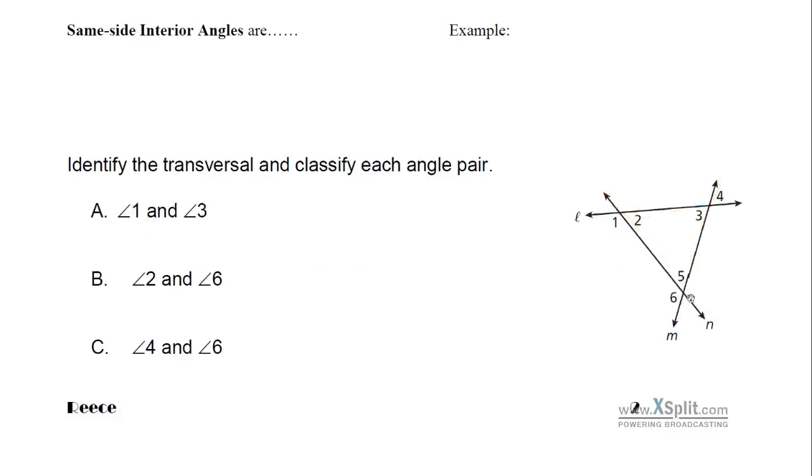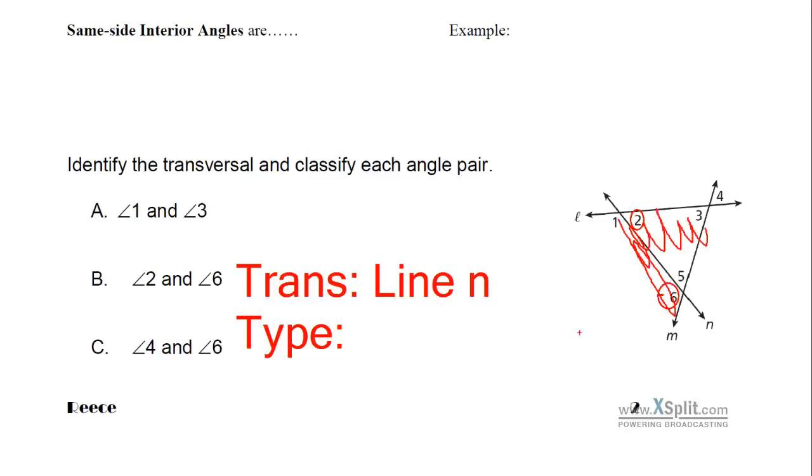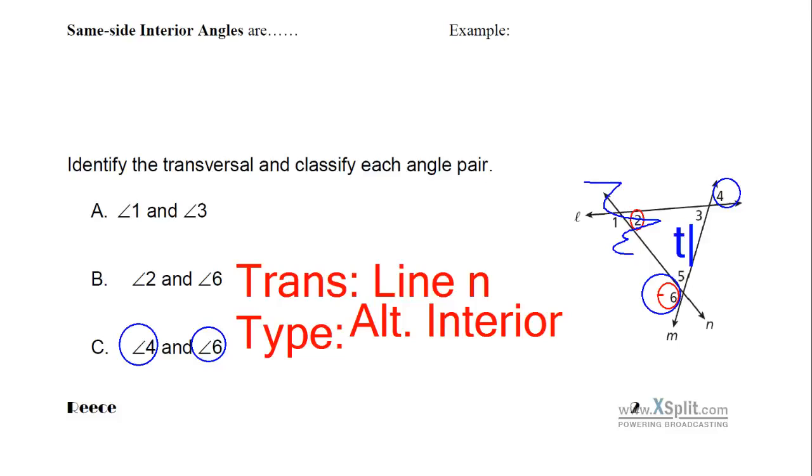What I'd like you to do for a moment is pause the video, try to identify for two and six what type they are, and for four and six what type they are. Alright, two and six, because two and six are both cut by line N, we say that the transversal is line N, and then the type, two and six, let's say they are here and here, they are both in the interior of the lines that are being cut, so they are alternate interior. On the other hand, if we have four and six, four and six are right there and right there respectively. We can ignore all this. Interior is going to be anything on the inside here, so they're both in the exterior this time. I would say that the transversal is M, and the type, they are both alternate exterior.